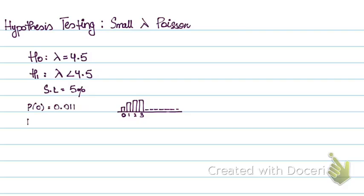I'll calculate my probability of 1, which turns out to be 0.499. So it's pretty evident that if I add these two probabilities, the sum will be greater than 5%. So I know that my critical region is basically just x equals 0.